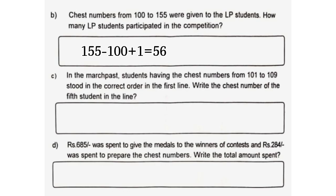C. In the March past, students having chess numbers from 101 to 109 stood in the correct order in the first line. Write the chess number of the 5th student in the line. The 5th student's chess number will be 105.